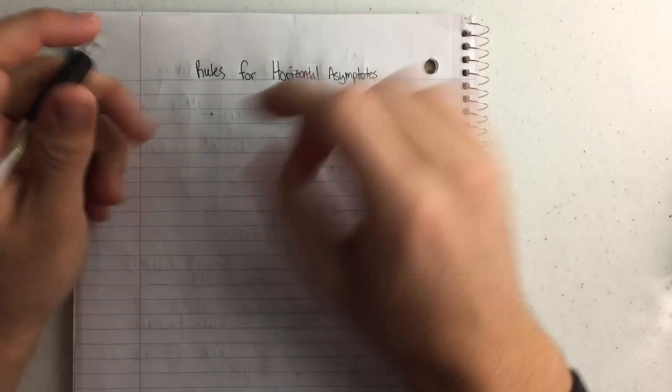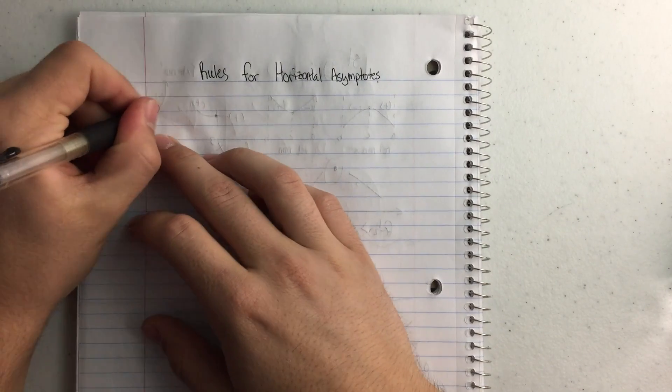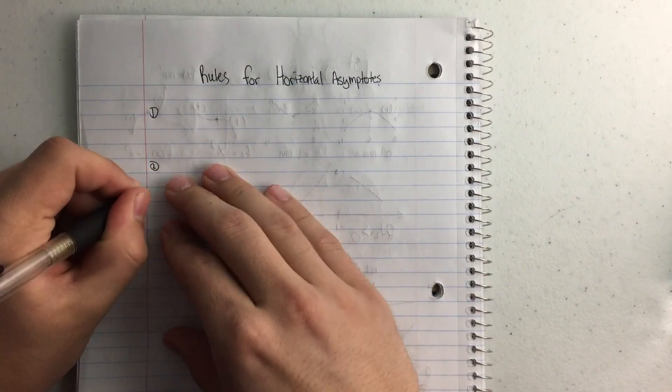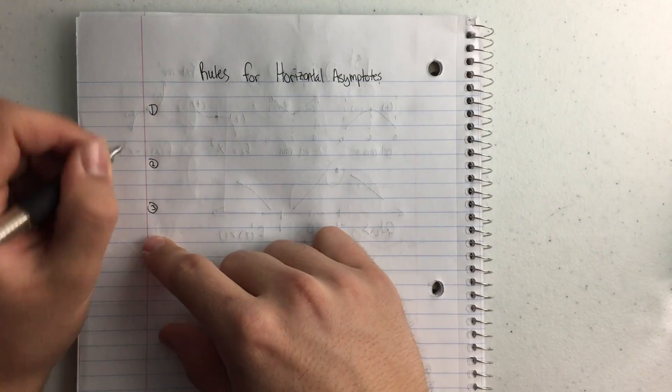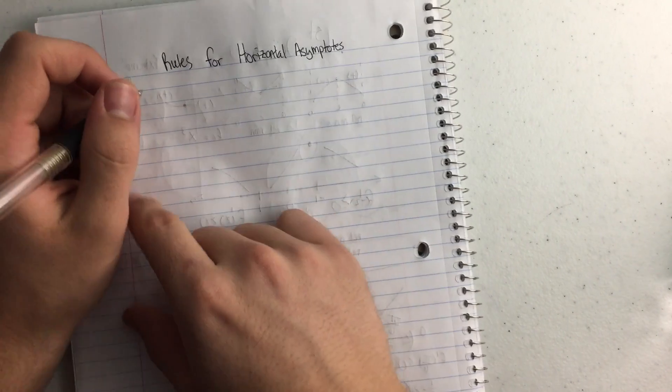Okay, so today we're talking about rules for horizontal asymptotes. There's really three rules and they depend on the degree of the numerator and the denominator of a function.